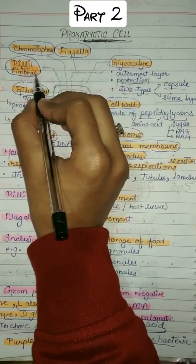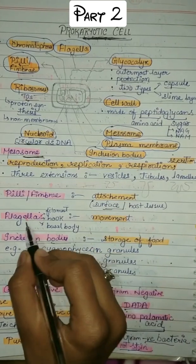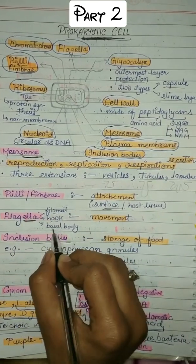There are some outer structures too, that is pili and fimbriae, which help in attachment to host cell and surface. For locomotion in bacteria, there is flagella. Flagella has three parts: filament, hook, and basal body.